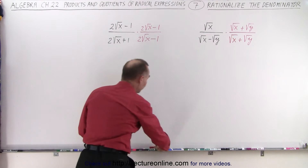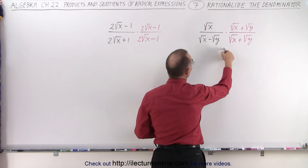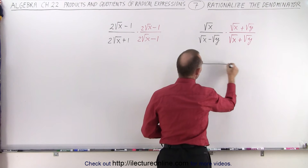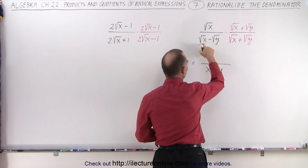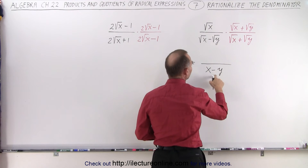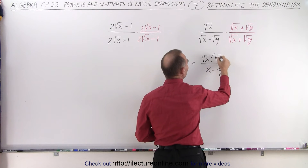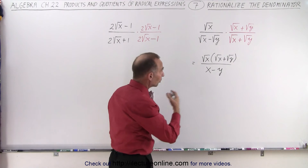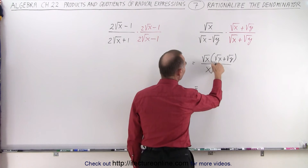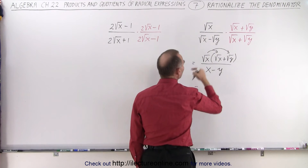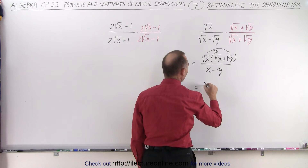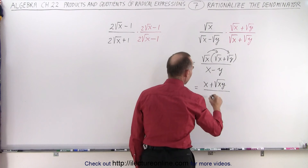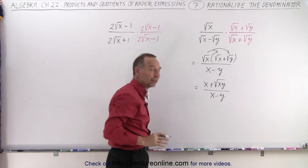Let's see what that gives us. On the right side, when we multiply the denominators, we simply write the square of the first minus the square of the second. So the denominator becomes x minus y — it's the first term squared minus the second term squared. In the numerator, we multiply each term with the square root of x, giving us x plus the square root of x times y, divided by the denominator, which is x minus y. That's probably the best form to leave it in.